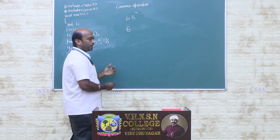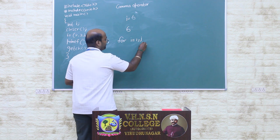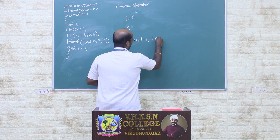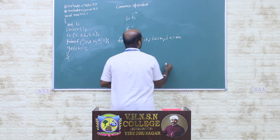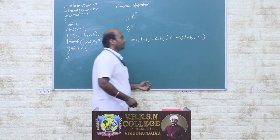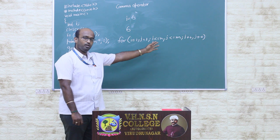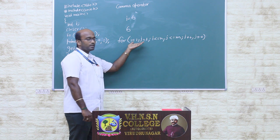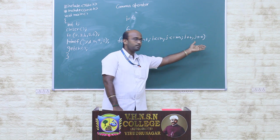For another example, we can have this for loop using commas. So i is equal to 1 comma j is equal to 1 — two assignments are here. And here we have two conditional statements separated by a comma, and we have two increments separated by commas.